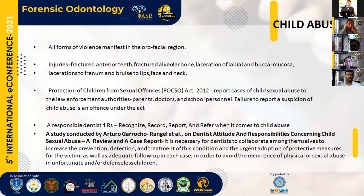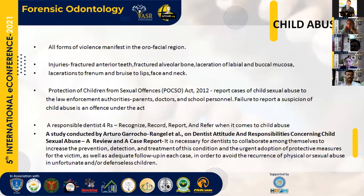Next is child abuse. All forms of child abuse violence usually manifest in the orofacial region. Injuries can occur over fractured anterior teeth, fracture of alveolar bone, laceration of labial and buccal mucosa, laceration to the frenum, and bruises to the face and neck. The POCSO Act 2012, in its latest amendment, increased punishment from 10 years to 20 years, with maximum punishment being imprisonment for life. As a responsible dentist, we should recognize, record, report, and refer — the four Rs significant in child abuse.